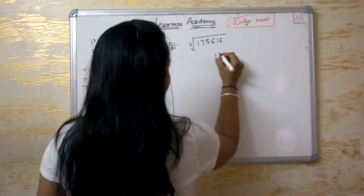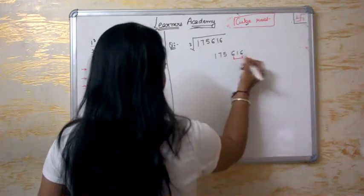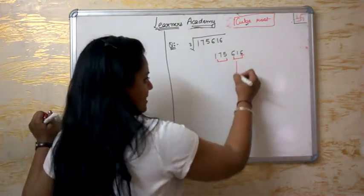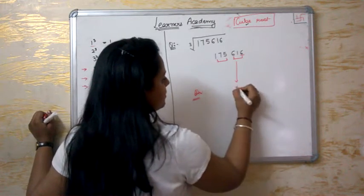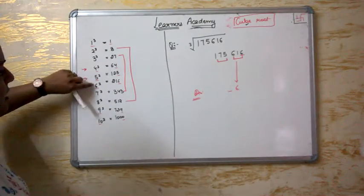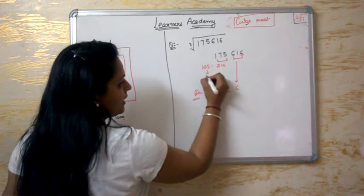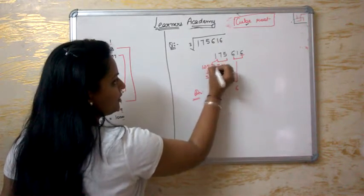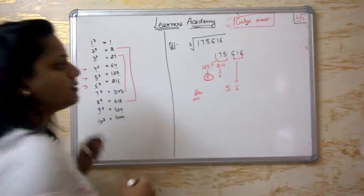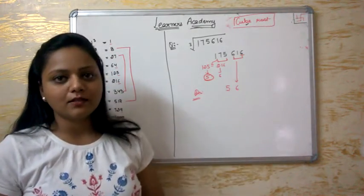Write down the number, which is 175616. Now make a set of three digits. Last digit is 6 — 6 only comes in the cube of 6. So the unit place of my answer is 6. Now for the tens place: 175 falls between 5 cubed = 125 and 6 cubed = 216. So always consider the lower value, which gives us 56 as the answer. That means if you multiply 56 three times, you get 175616.